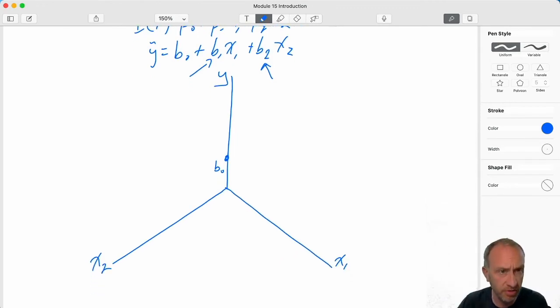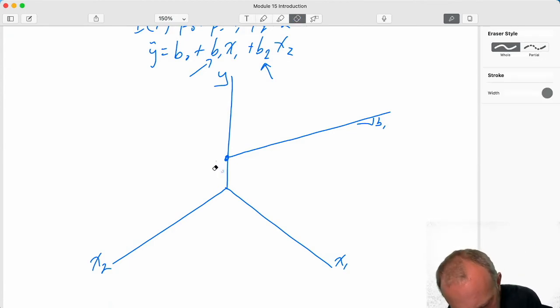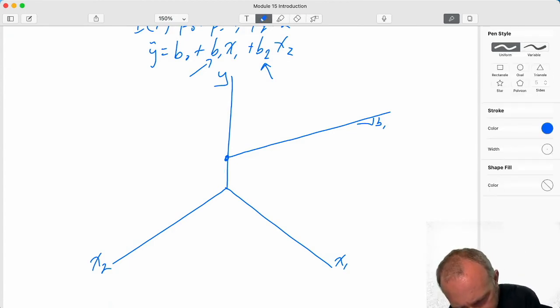And so if I isolate X1, and I say, well, maybe that relationship looks something like this. And so there's that slope, B1. And then if I isolate just X2, and I look at what is that marginal effect of a change in X2 on Y, well, maybe that looks something like this. Something like that. And so there's B2.